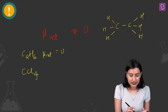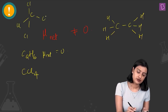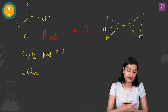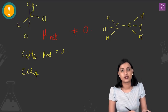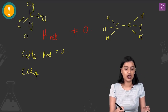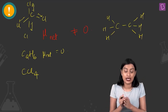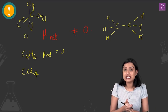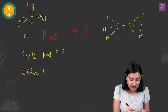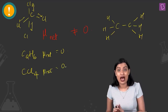For CCl4, the structure is tetrahedral. Chlorine is more electronegative and pulls the bond pairs towards itself in all four bonds. However, when you perform vector addition taking the bond angles into account, the net dipole moment cancels out: μ_net = 0. CCl4 has polar bonds but the molecule overall is non-polar.